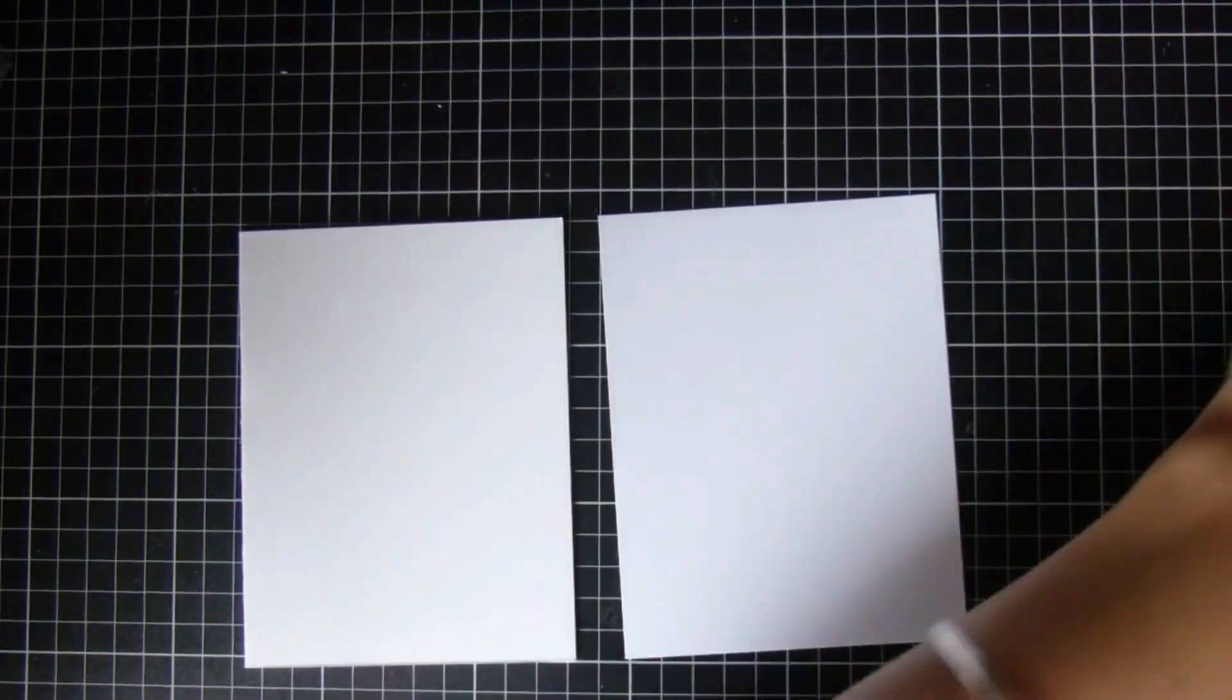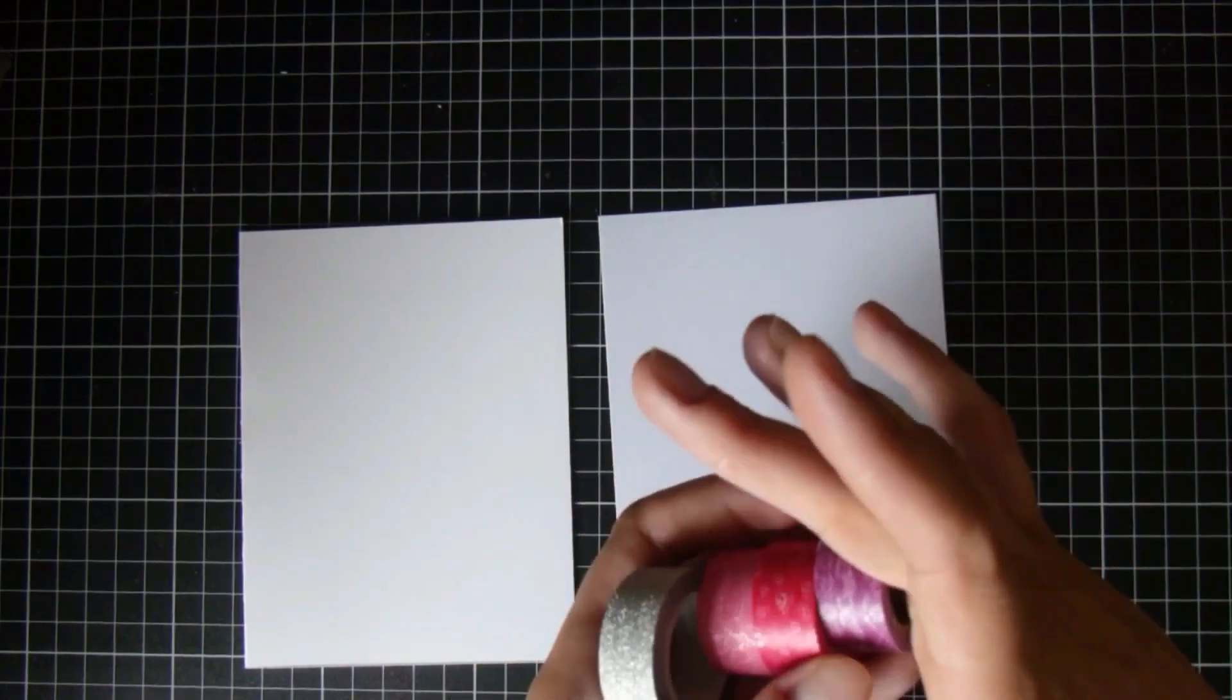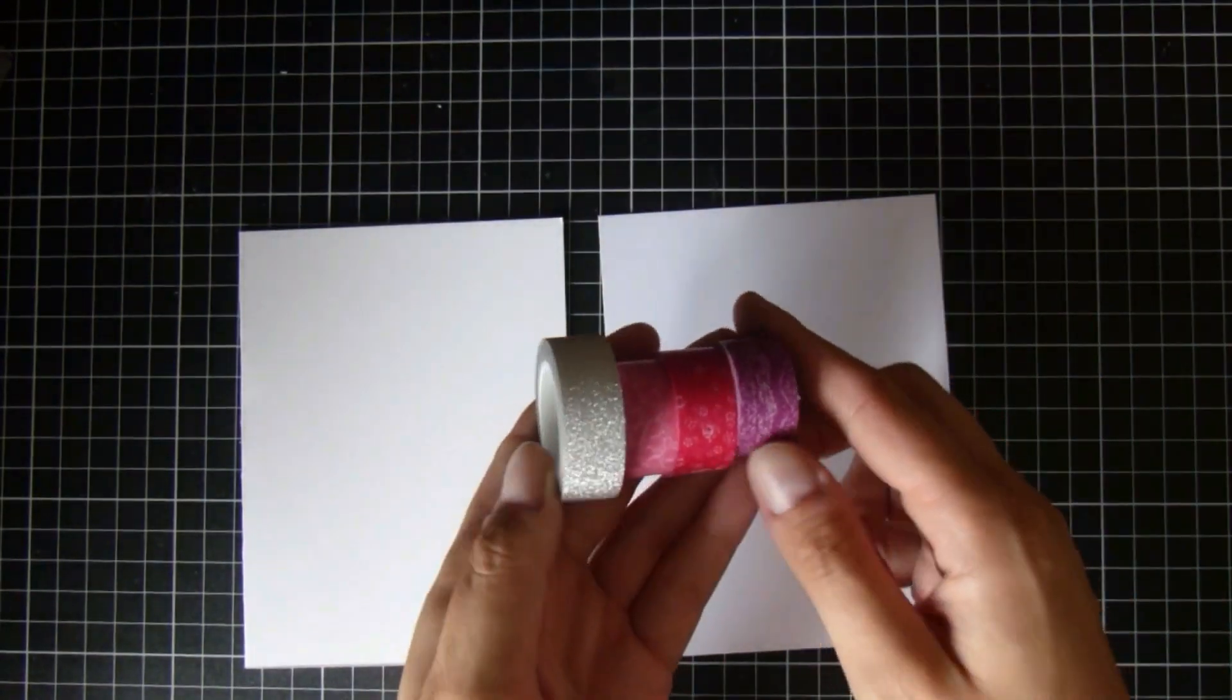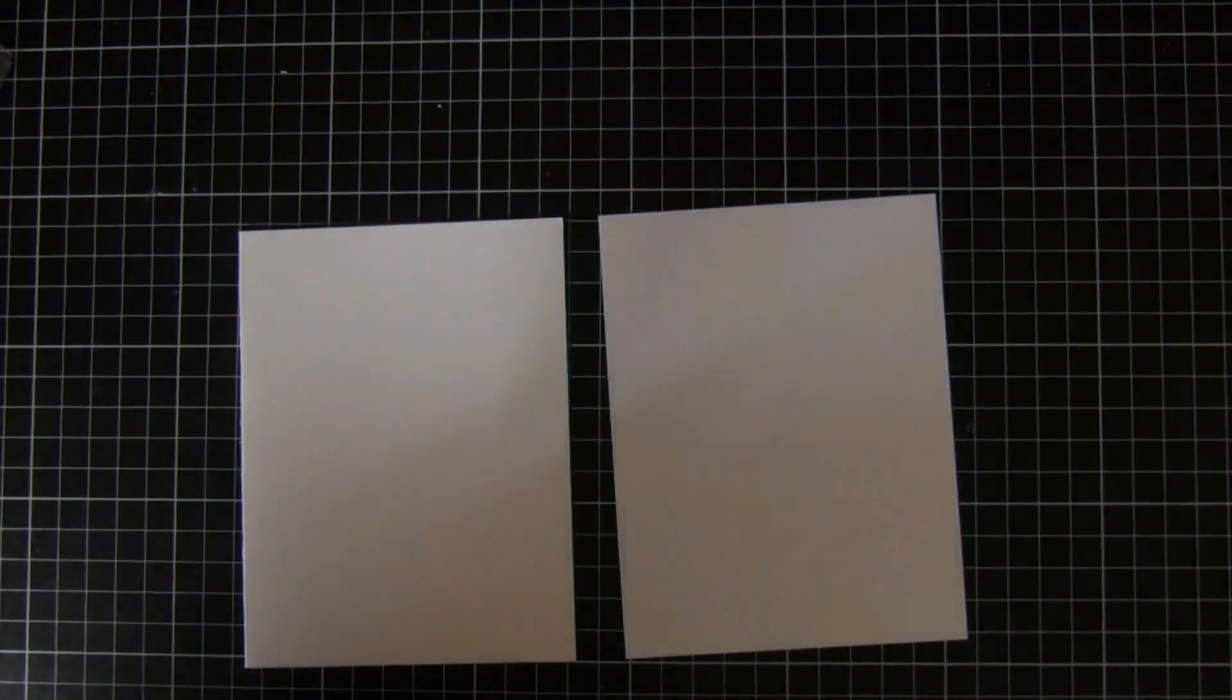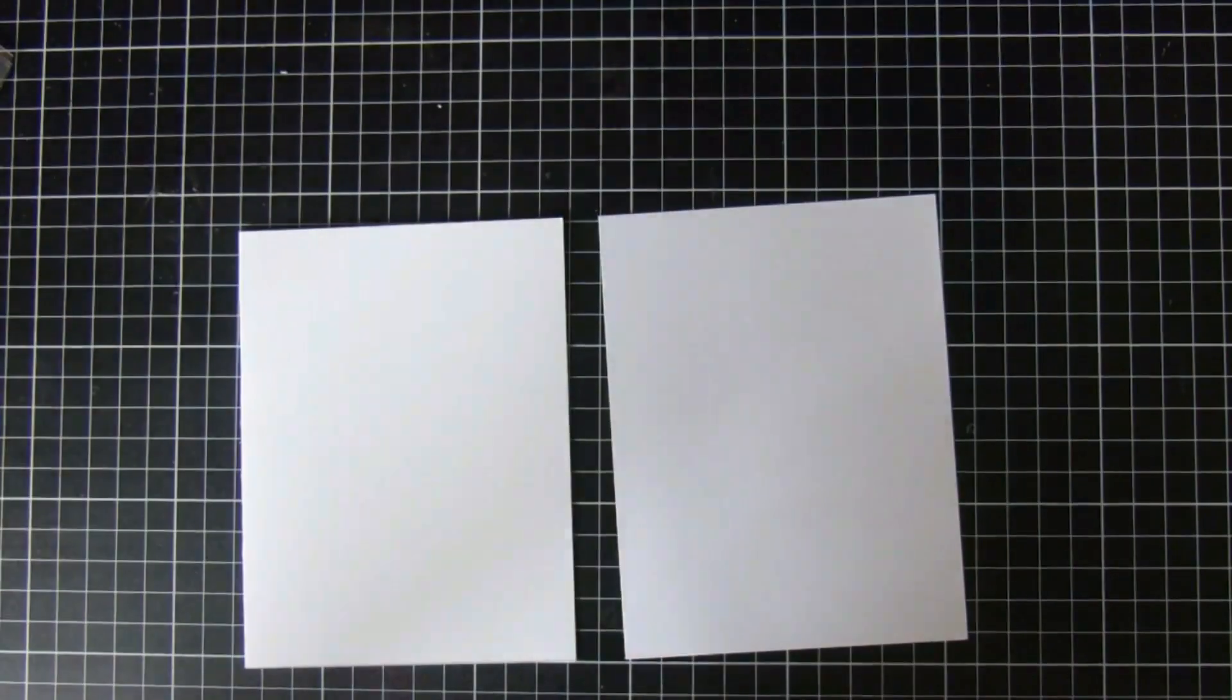So I recorded it. First up, I've got a card base on the left made out of Neenah Solar White 110 pound cardstock. I just have these four washi tapes—there's three.